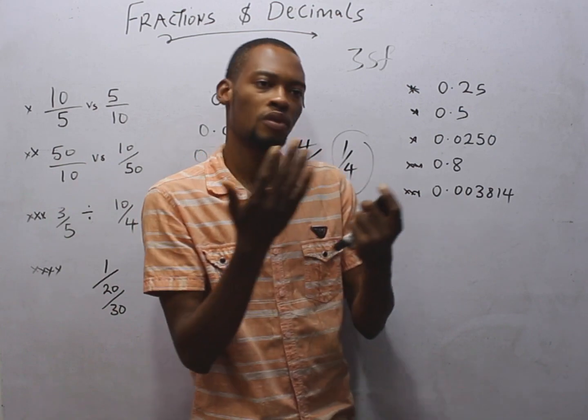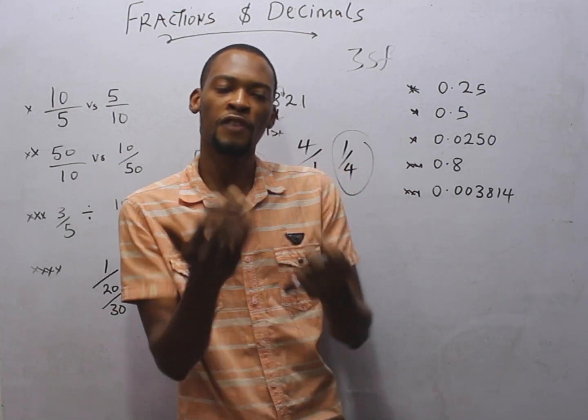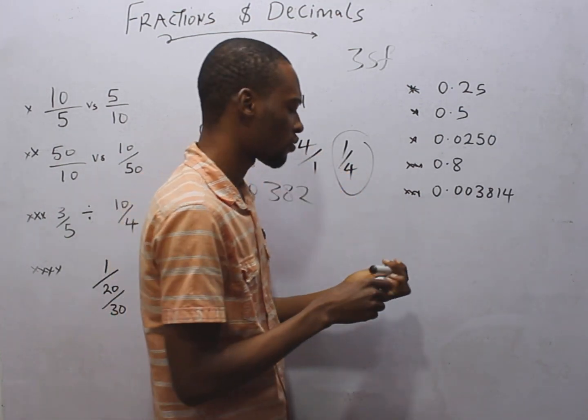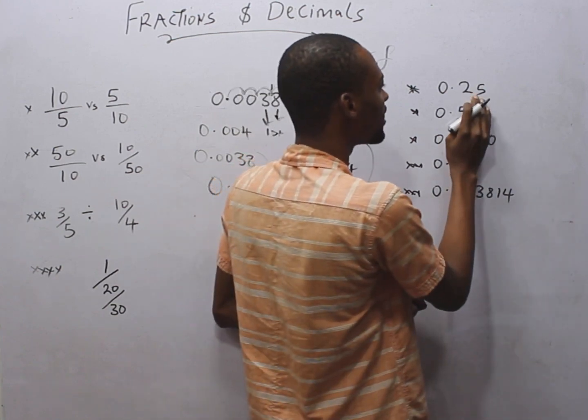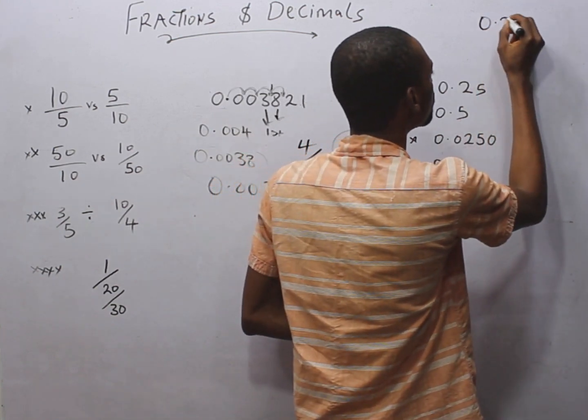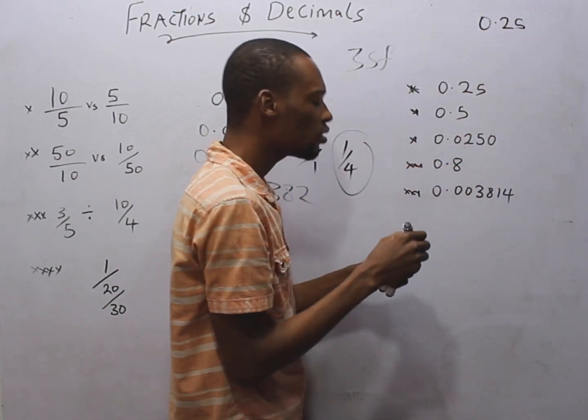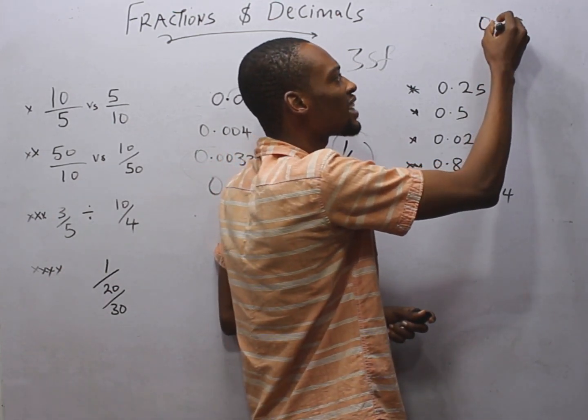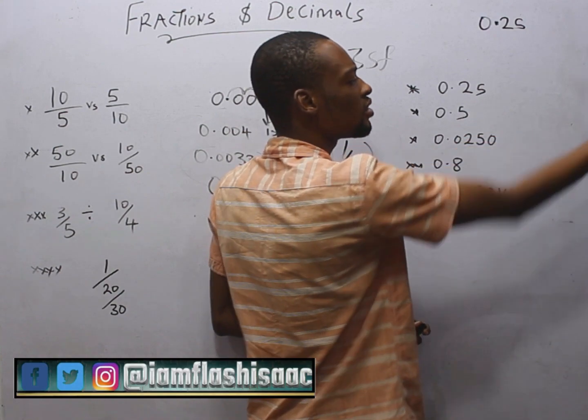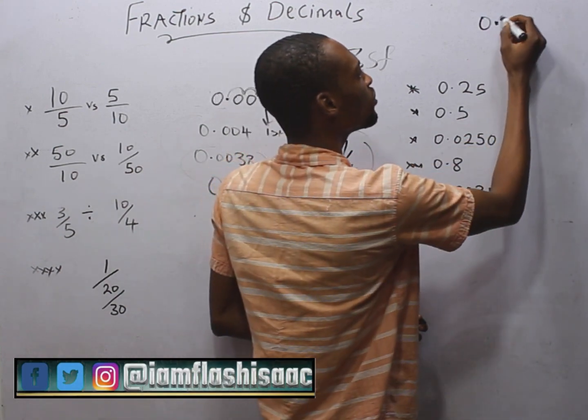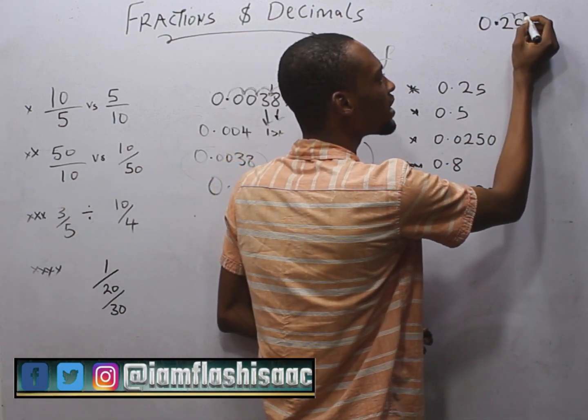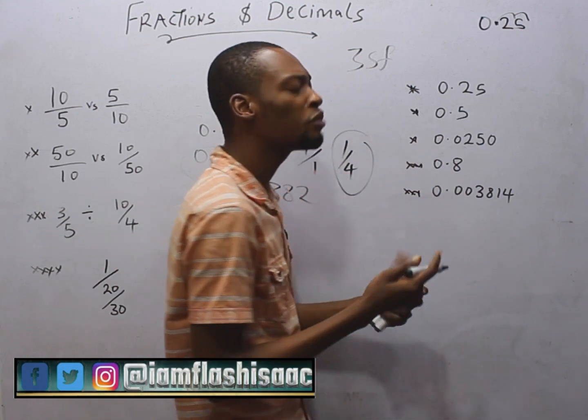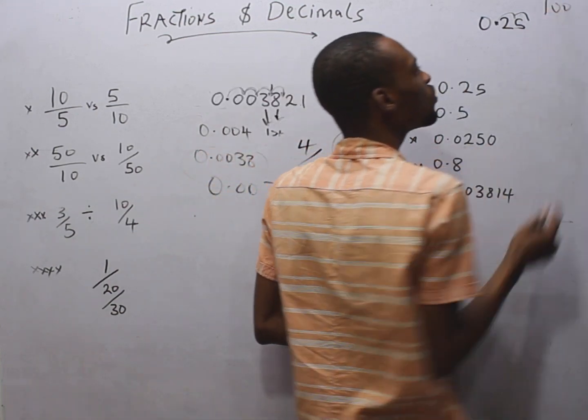If I give you this, if I change this to fraction, what do you do? You break this out. This is the decimal number 0.25. Now, take note here. Start moving this point towards your right. We move once, right? Move again twice.